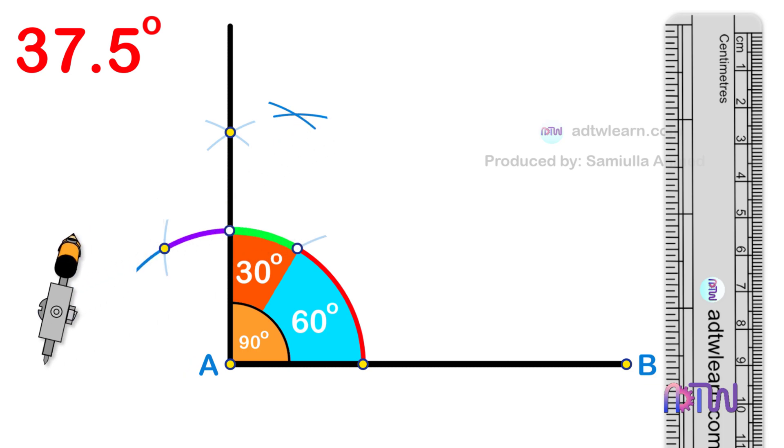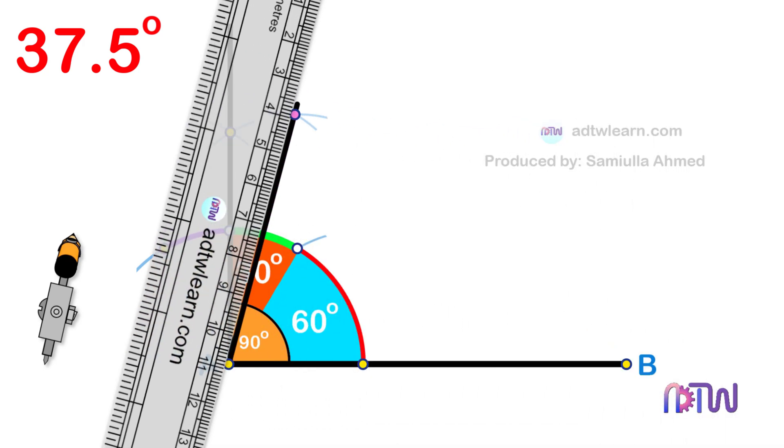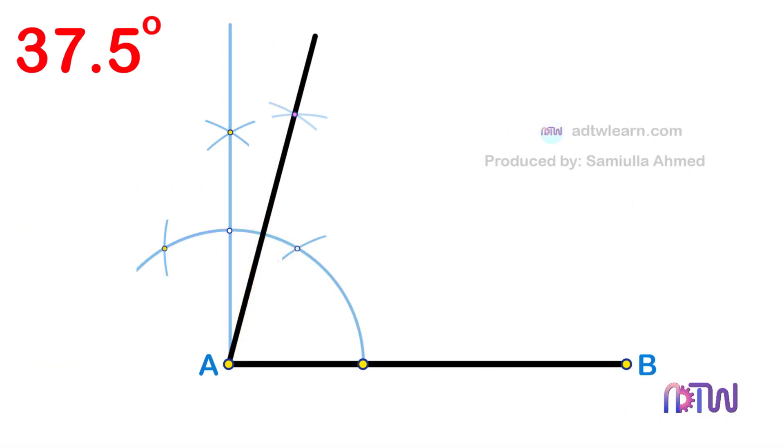After this, draw a line passing through this point from endpoint A of the line. Therefore, we got the required 75 degree angle using a compass.